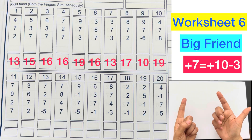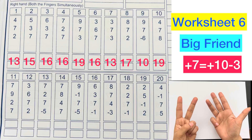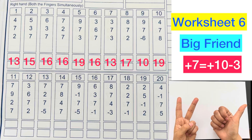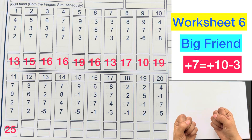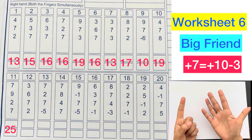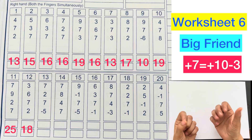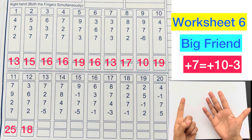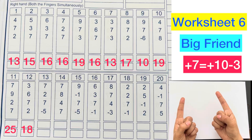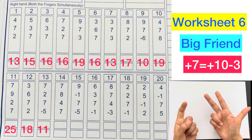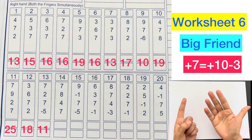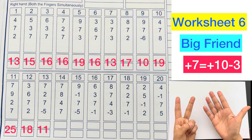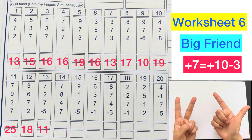4 plus 7 plus 10 minus 3 plus 8, answer is 19. 7 plus 9 plus 10 minus 1 plus 2 plus 7 plus 10 minus 3, answer is 25. 3 plus 6 plus 7 plus 10 minus 3 plus 2, answer is 18. 7 plus 2 plus 7 plus 10 minus 3 minus 5, answer is 11. 7 plus 8 plus 10 minus 2 plus 4 plus 7 plus 10 minus 3, answer is 26.